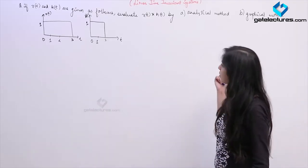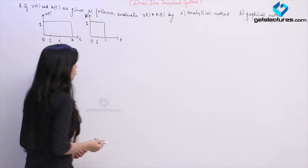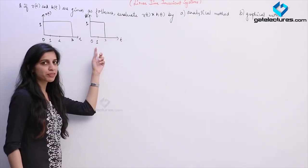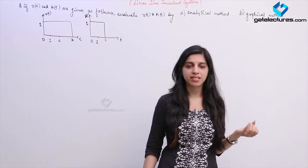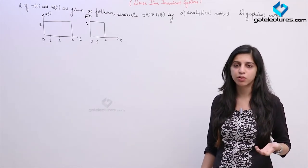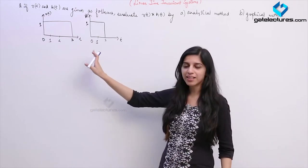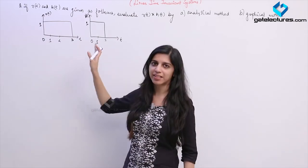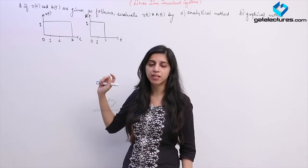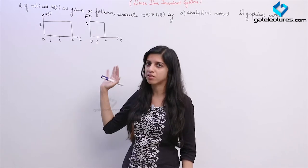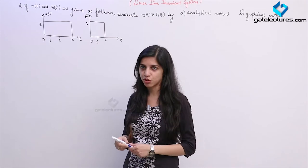Now we look at convolution of these two pulses graphically. For graphical convolution, what we are doing is we are shifting h(t). We are making a shift of t in this pulse h(τ), and according to different values of t — whether t is less than 0, t lies between 0 and 2, greater than 2, less than 5 — we are shifting this pulse accordingly. Then we see where these two pulses intersect and what is the area under the intersection of these two pulses. According to that we are going to sketch their convolution.